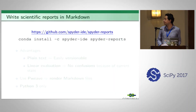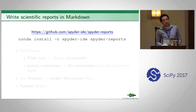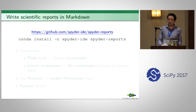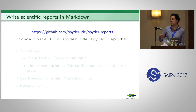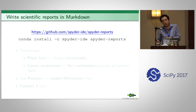The next plugin is called Spyder Reports. It allows you to write scientific reports in Markdown. Scientific reports are composed of text, code, graphics, and mathematical formulas. There are several people who, instead of writing these reports in Jupyter Notebooks, prefer to use Markdown files — they usually come from the R community where they have tools like R Markdown. When they move to Python they miss this kind of tool in the ecosystem.